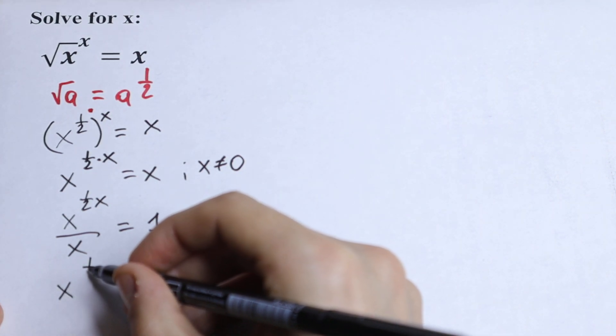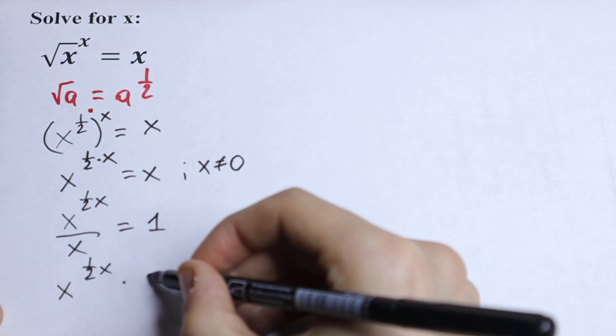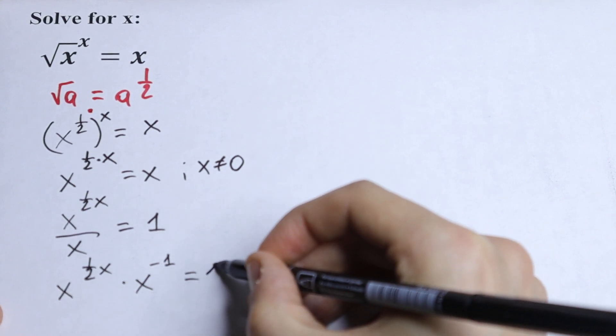So we will have x to the power (1/2)x times x to the power minus 1 equal to 1.